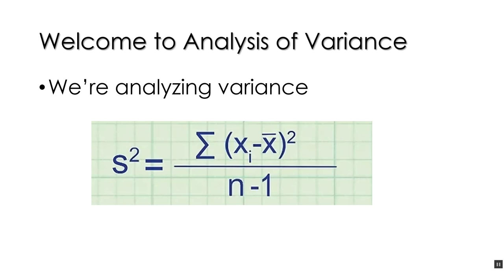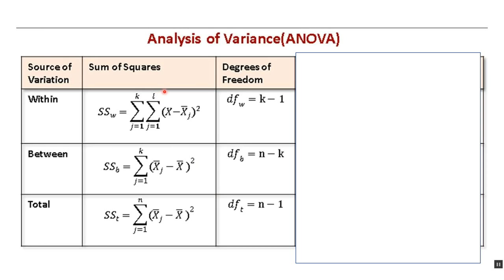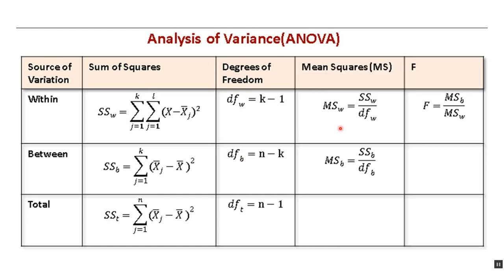Let's go back to where we ended — welcome to analysis of variance. We're analyzing variance. Variance s-squared is the sum of squared deviations — the sum of squares — over some type of degree of freedom. That's what we get with the analysis of variance: we take the sum of squares and divide it by a degree of freedom for the within and the between sources of variance.